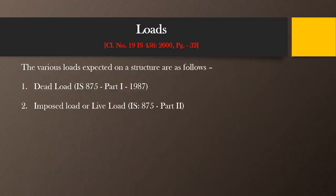The second load is imposed load, also termed as live load. It is the load of components or persons which is not constant — that particular load is not constant on the structure and is going to change with time. That is why this load is also called a live load. As per the specifications, these live load values have been provided in IS 875 part 2.